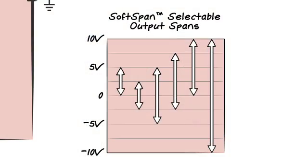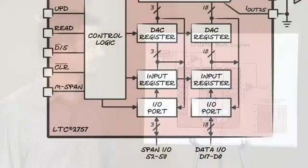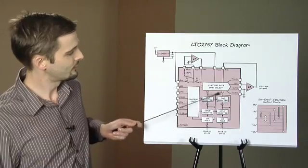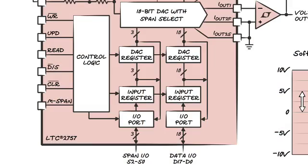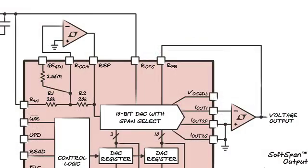This DAC also features six soft span output ranges, range selection logic if only a single range is required, double buffered data interface with readback, and offset and gain adjustment pins that are voltage controlled for compensating system level errors.